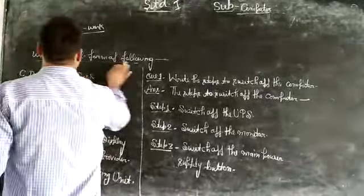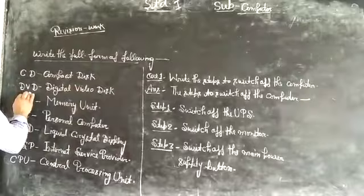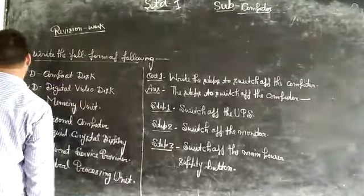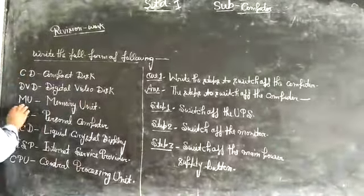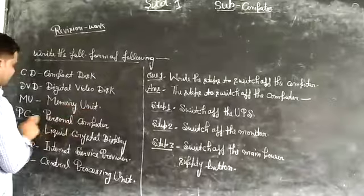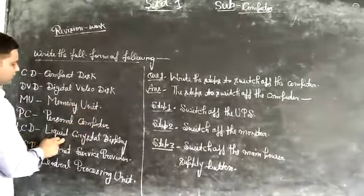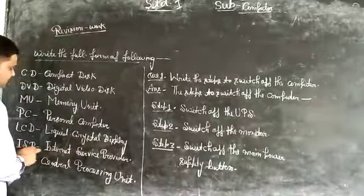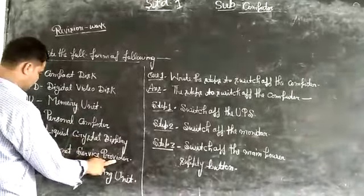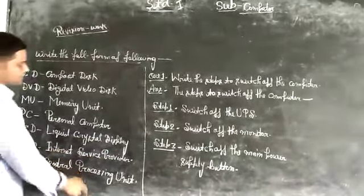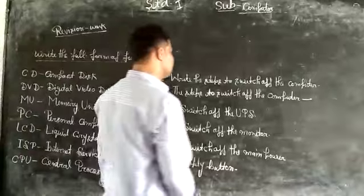We have also seen: CD - Compact Disk, DVD - Digital Video Disk, RAM - Memory Unit, PC - Personal Computer, LCD - Liquid Crystal Display, ISP - Internet Service Provider, CPU - Central Processing Unit.